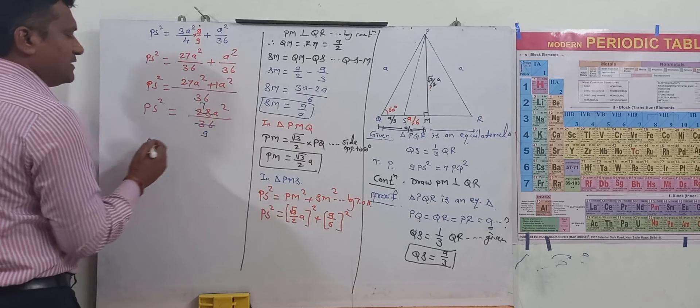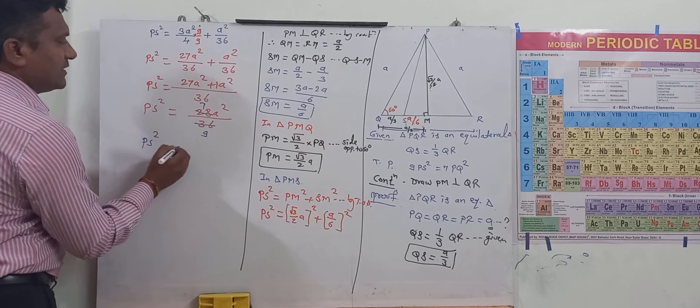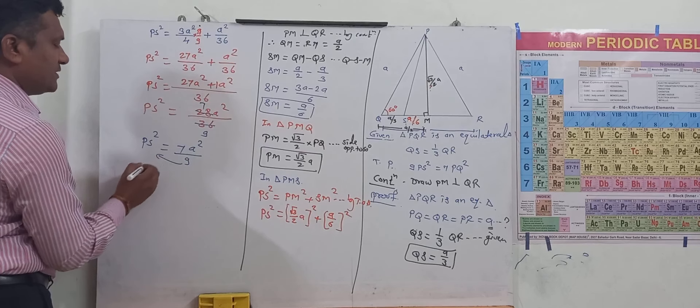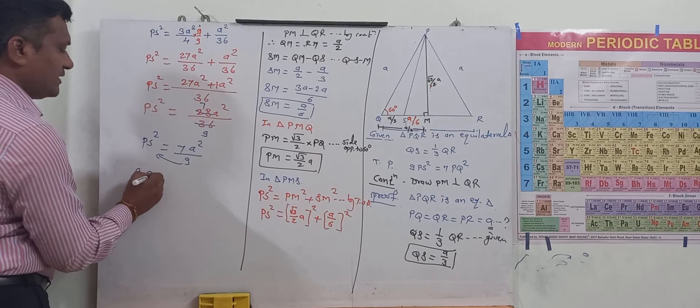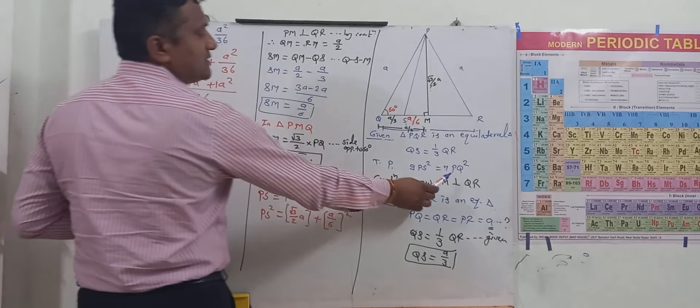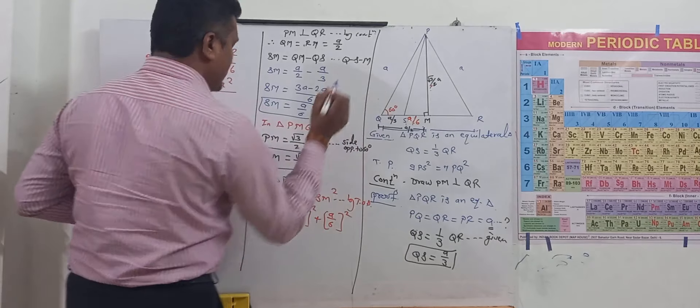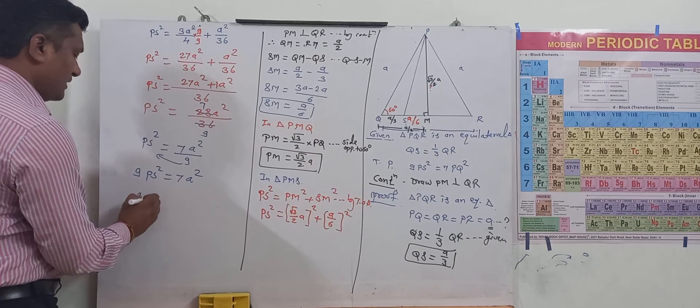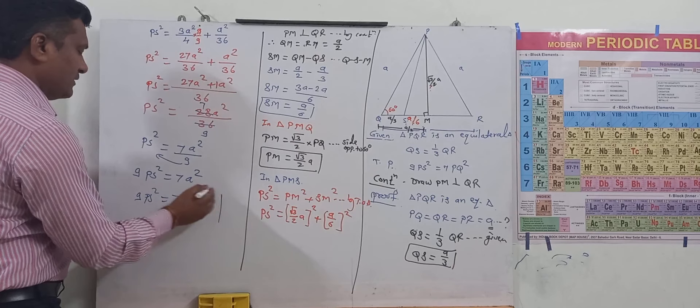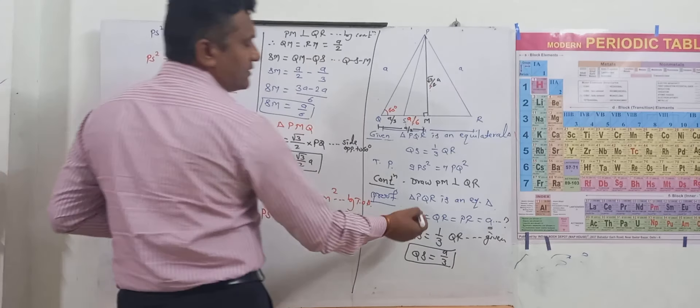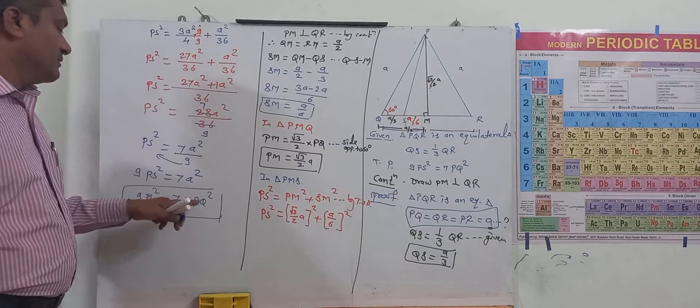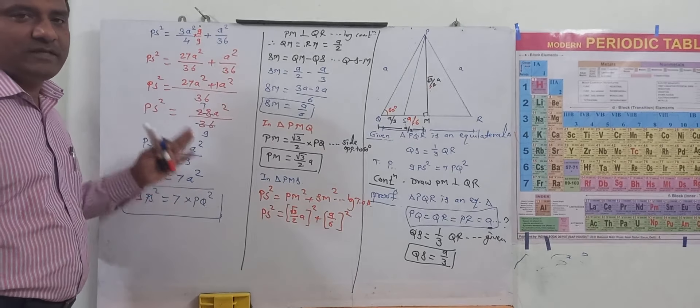Therefore PS square equal to 28 A square by 36. This square reduced, it is 7 by 9. So we got it PS square equal to 7 A square by 9. Therefore 9 PS square equal to 7 A square. And A means PQ. Therefore 9 PS square equal to 7 into PQ square.